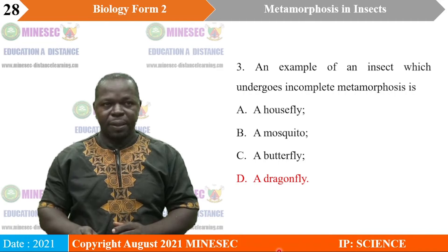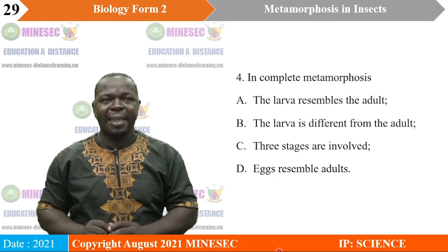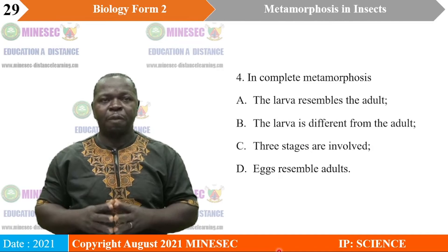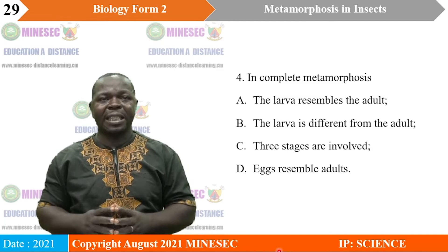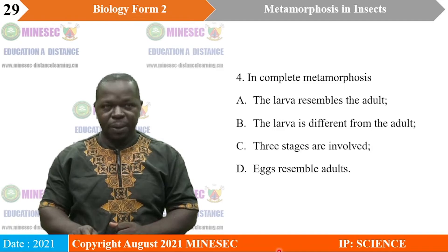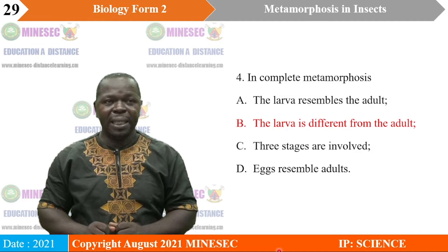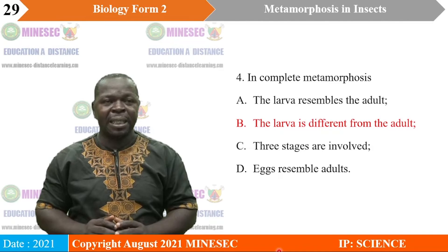In complete metamorphosis — A. The larva resembles the adult, B. The larva is different from the adult, C. Three stages are involved, D. The nymph resembles the adult. In complete metamorphosis, the larva is different from the adults, so B is correct. And that reduces competition, because the larva and adults are different and will not feed on the same kind of food.